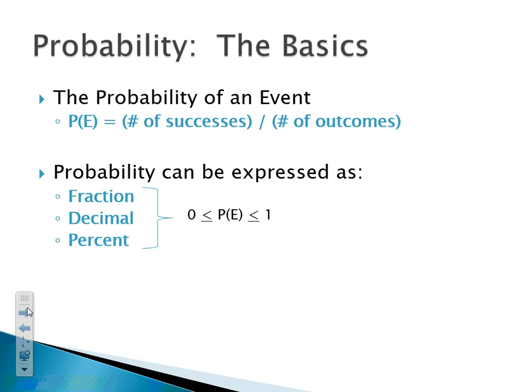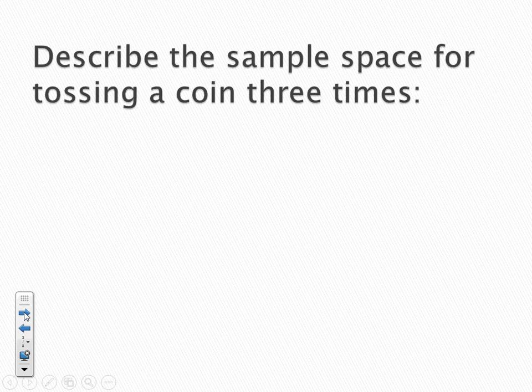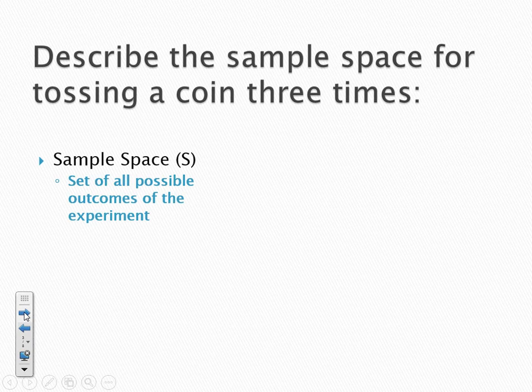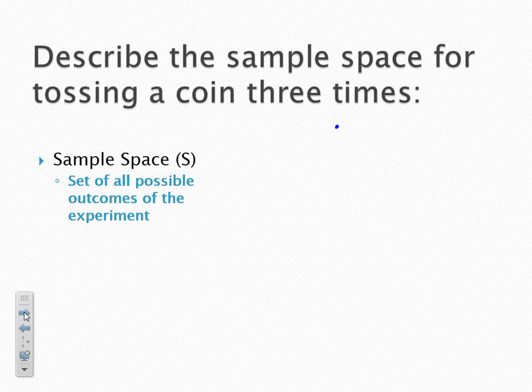Let's use this information to introduce the idea of a sample space. The problem says: describe the sample space for tossing a coin three times. When we see that term 'sample space,' that just means we want to come up with all possible outcomes for whatever experiment we're looking at. What's helpful in a situation like this is to use something known as a tree diagram to help us create the sample space.